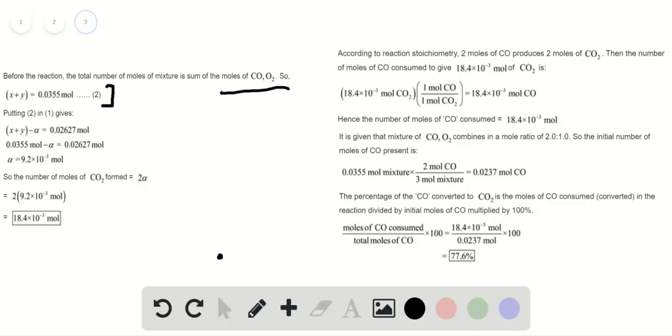Putting equation 2 into equation 1, we have the number of moles of carbon dioxide formed, which is 2a, equivalent to 18.4 times 10 raised to the power negative 3 moles.